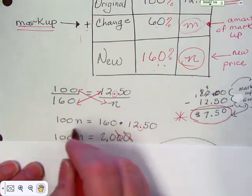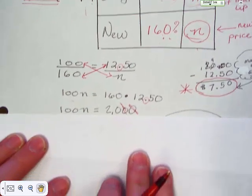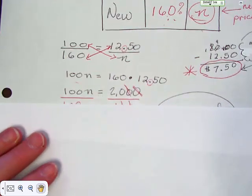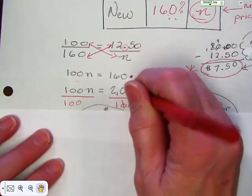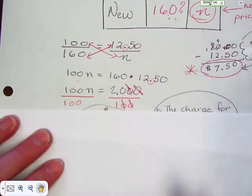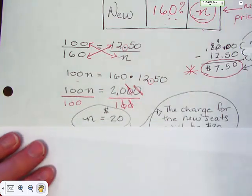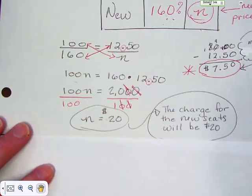Okay. So if you take a hundred and sixty times twelve fifty you get two thousand. Well now you have to divide that by one hundred, and if you divide it by one hundred basically all you have to do is cross out two zeros.